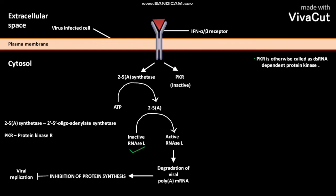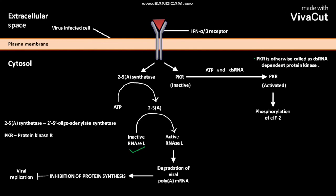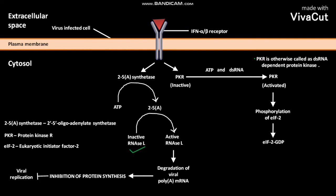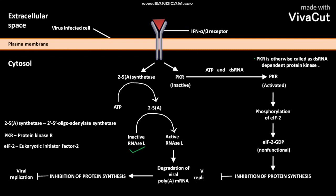Degradation of viral poly-A mRNA causes inhibition of protein synthesis, which then blocks viral replication. The inactive PKR, in the presence of ATP and dsRNA, is converted into an activated conformation. The activated PKR then causes phosphorylation of eIF2, producing eIF2-GDP, which is non-functional in nature. This non-functional eIF2-GDP causes inhibition of protein synthesis, which blocks viral replication.